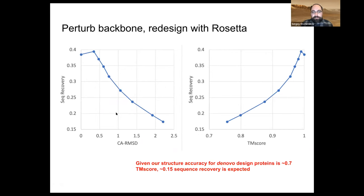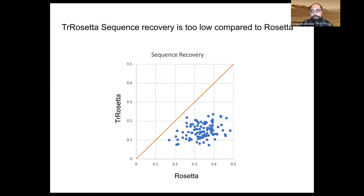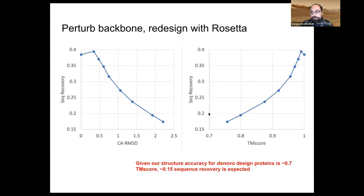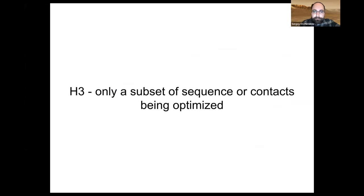Going back to the slide showing de novo design proteins — their TM score accuracy is around 0.7-0.8. If the model only predicts structures at about 0.7 TM score accuracy, we'd actually expect sequence recovery in the 15-20% range. That's totally in line with what we observed. So TrRosetta operating at roughly 2 Ångström RMSD resolution is probably why we're having such a hard time getting high sequence recovery in design.